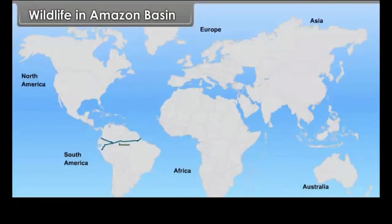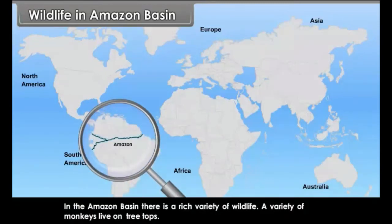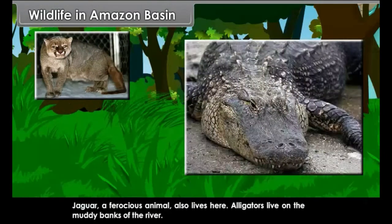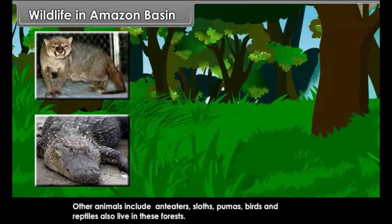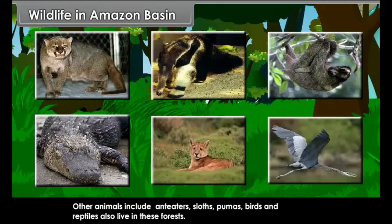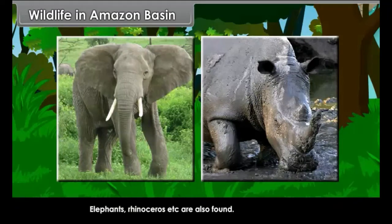In the Amazon Basin there is a rich variety of wildlife. A variety of monkeys live on treetops. Jaguar, a ferocious animal, also lives here. Alligators live on the muddy banks of the river. Other animals include ant-eaters, sloths, pumas, birds, and reptiles. Elephants, rhinoceros, etc. are also found.